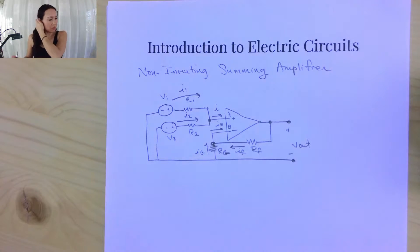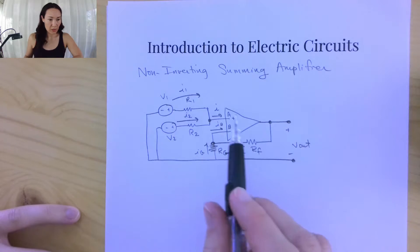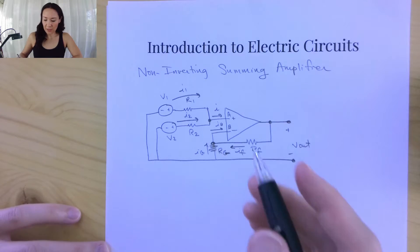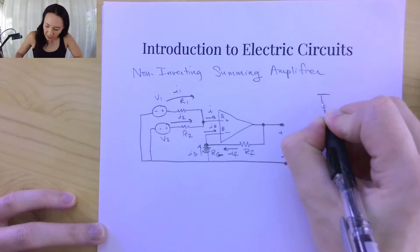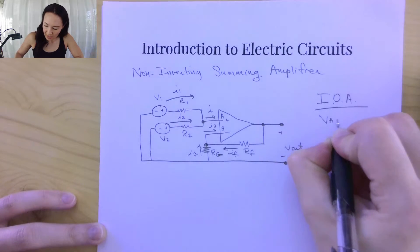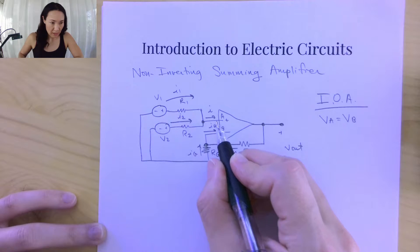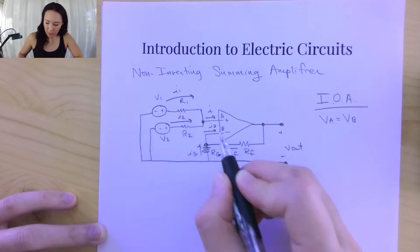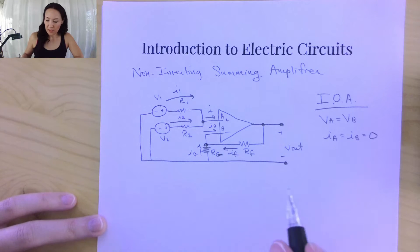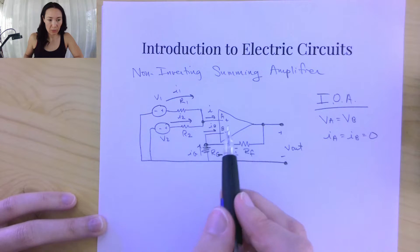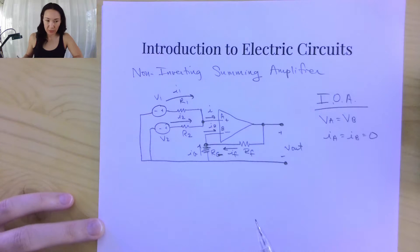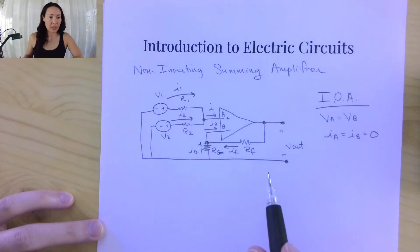Just like we did before, we're going to use node voltages to evaluate this circuit, and we're going to use the ideal op-amp approximations to make our lives easier. I'll write those over here so we can refer to them. The ideal op-amp approximations are that VA is equal to VB — where VA is the voltage at the non-inverting input and VB is the voltage at the inverting input — and IA is equal to IB is equal to zero. So we approximate that there's no current flowing into the input terminals of our op-amp.